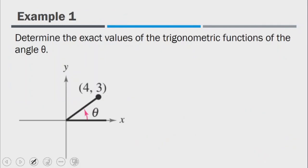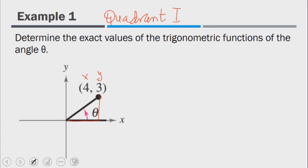In this first example, we are determining the values of the trigonometric functions of angle theta in the first quadrant. We are given the coordinate position of the terminal side of angle theta. The value of x is 4 and the value of y is 3, so this side of the right triangle is 4 (the x side) and this side is 3 (the vertical y side).